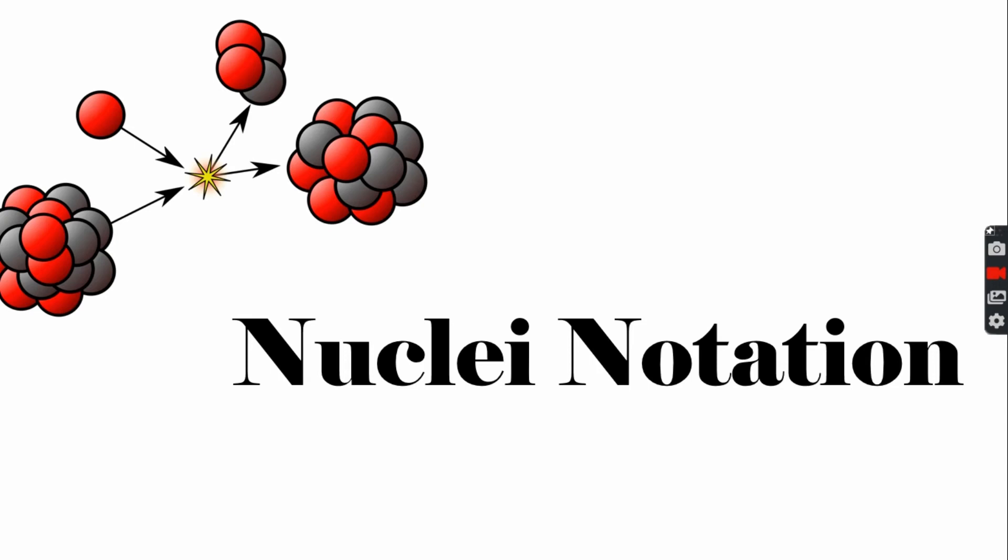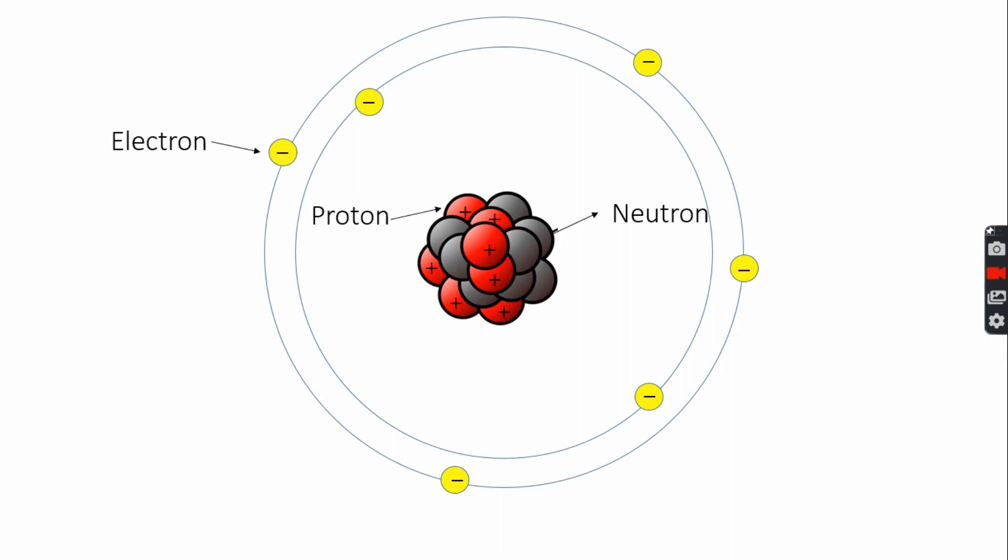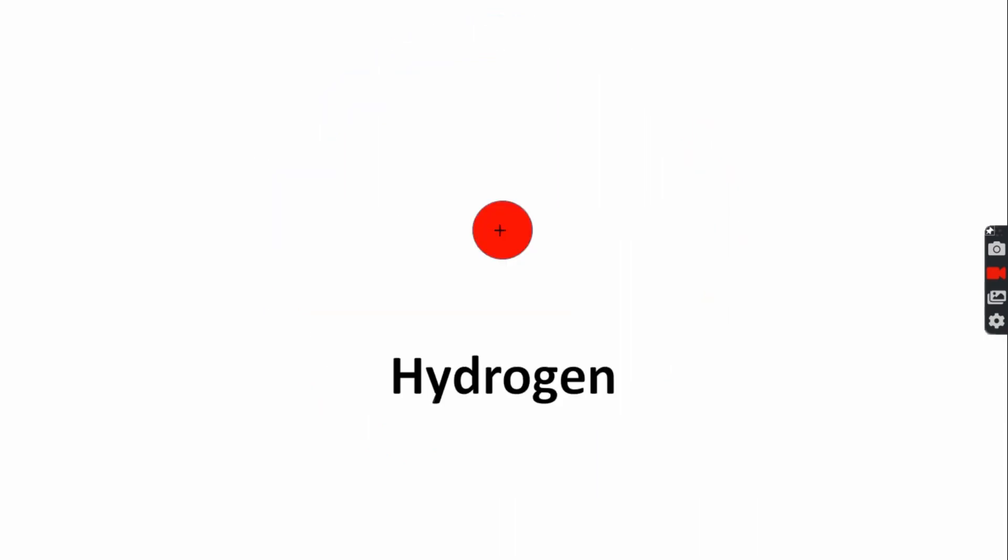We know that atoms have a tiny nucleus with positively charged protons and neutrons, which have no charge, as well as negatively charged electrons that are some distance away from the nucleus. Every element is a combination of some number of these three particles. The one that determines which element an atom belongs to is the proton. One proton means hydrogen, two is helium, three is lithium, and so forth.